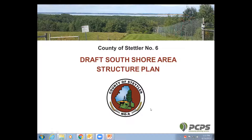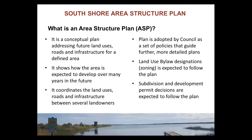First, what is an Area Structure Plan? An Area Structure Plan is a conceptual policy plan adopted by council. It addresses future land uses, roads, and infrastructure in a set area or series of parcels. It identifies uses like residential and open space areas and relates those to the infrastructure necessary to support future development — water, wastewater, roads, and stormwater management. Area Structure Plans speak to the level and intensity of development, and lay out a process landowners are expected to follow to move concepts toward concrete projects on the ground.